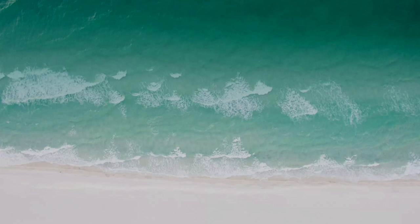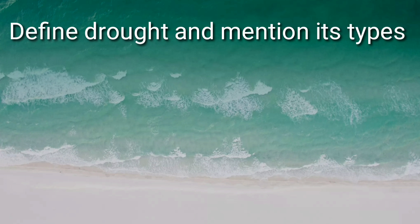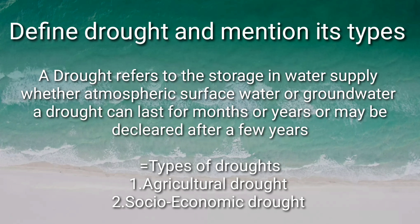Next question: define drought and mention its types. A drought refers to the shortage of water supply, whether atmospheric, surface water, or ground water. A drought can last for months or years, or may be declared after a few days. For some period — years or months — there is a shortage of water.